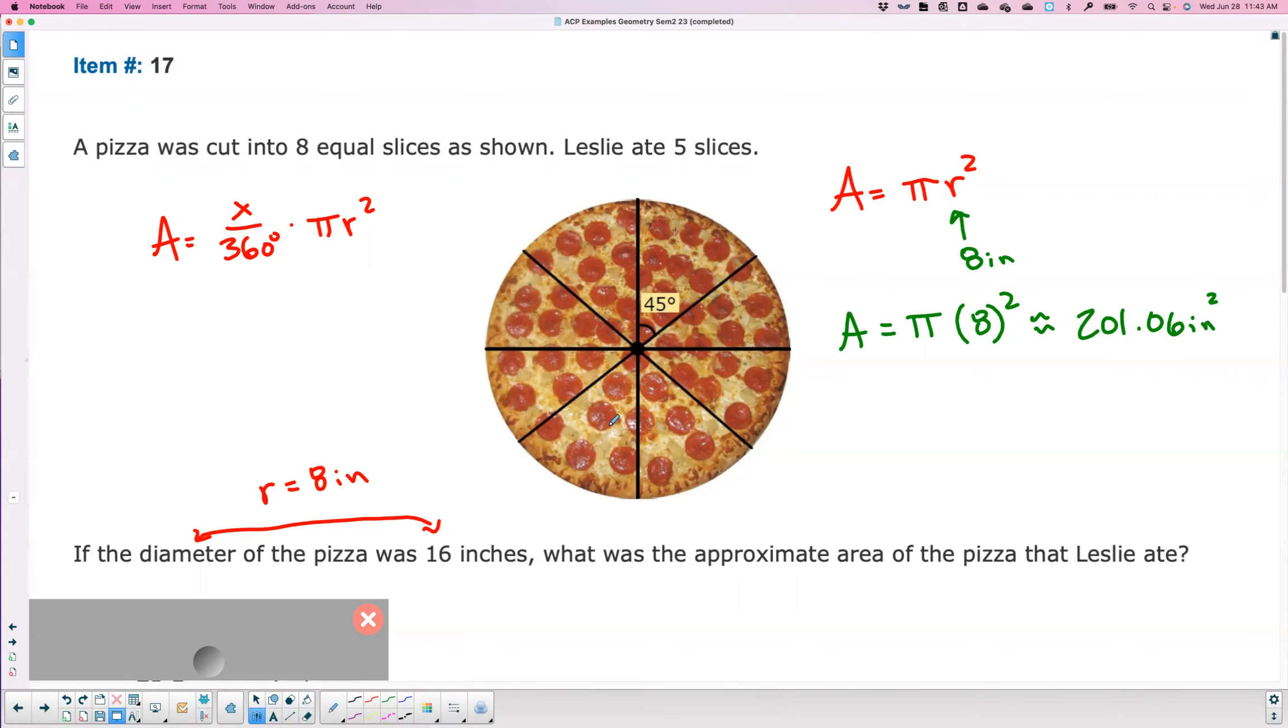Now that's the area of the whole circle. Are we looking for the whole circle? No. Five out of eight. So you can then take this and multiply by five eighths or what I saw most students do is they first find out how much area is in each slice. If you divide it by eight, you get the amount of pizza or area of the pizza for each slice.